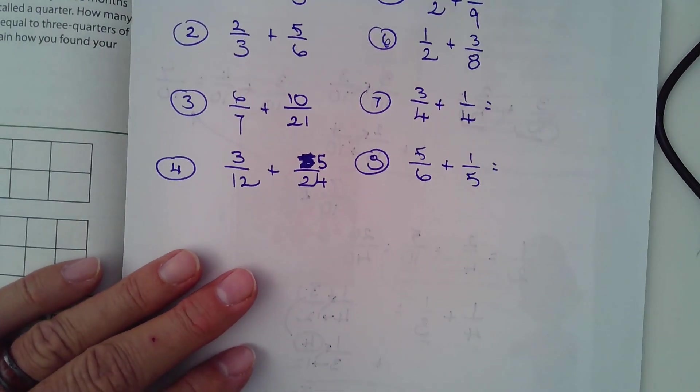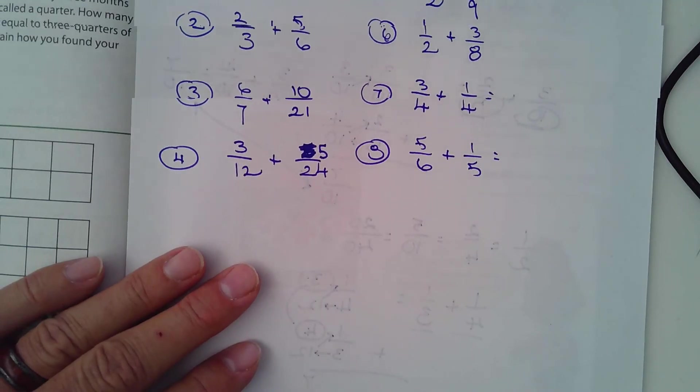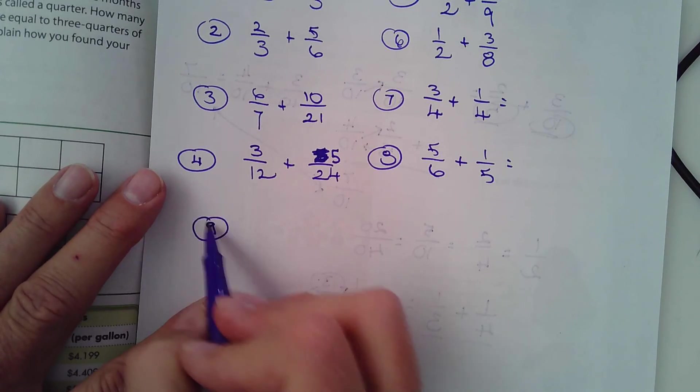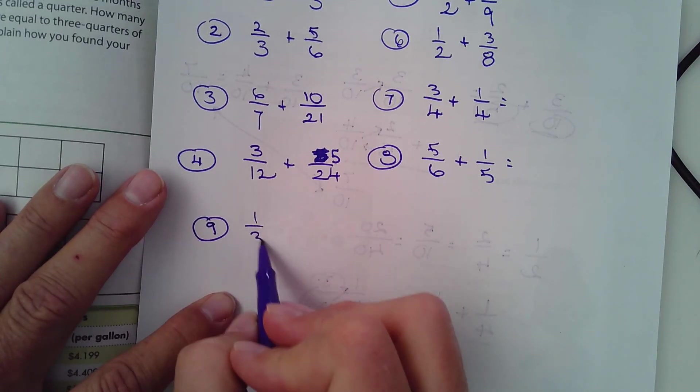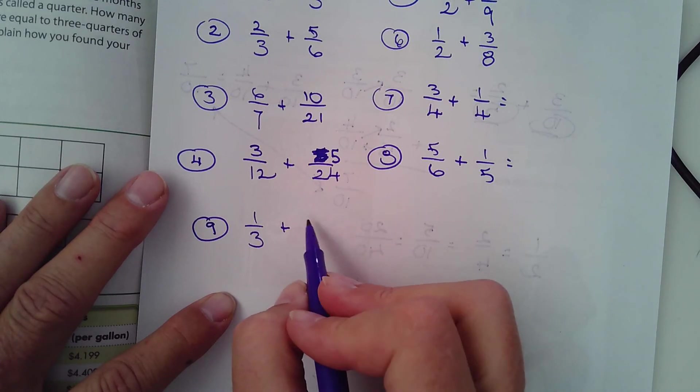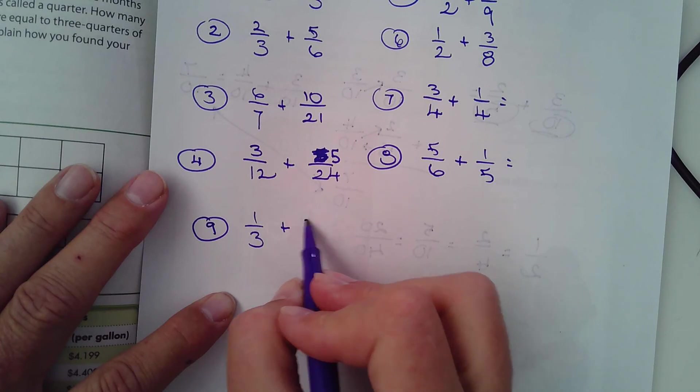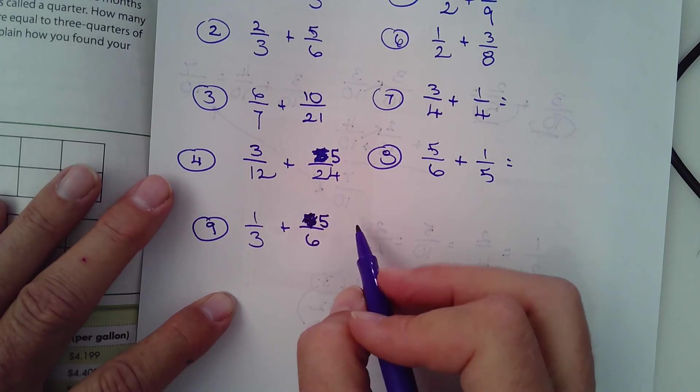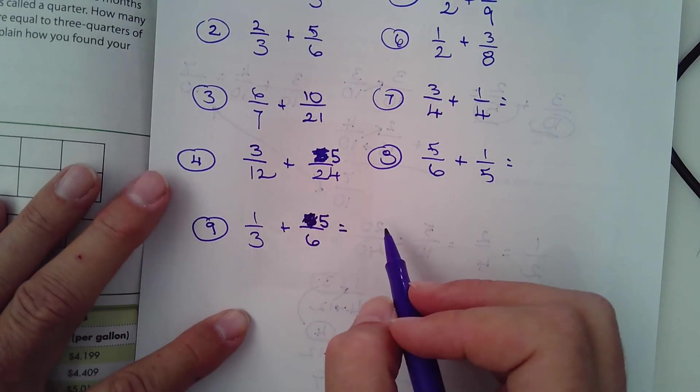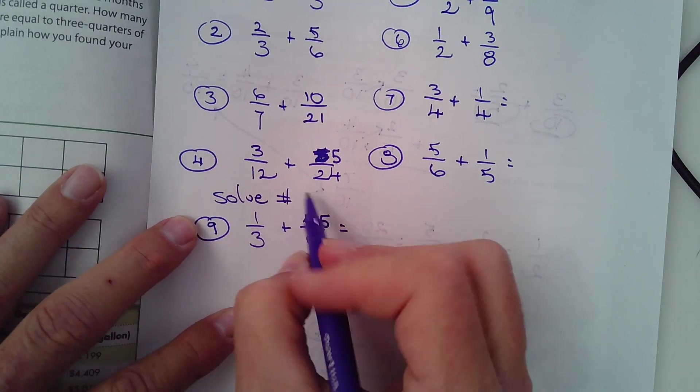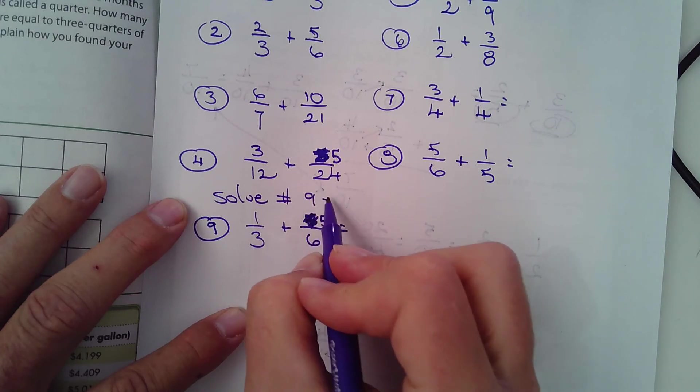And then add these. Let's do three more here. 9, or I don't know how many more. How about number nine, 1/3 plus 5/6. Again, that's a 5. Actually solve that one. Solve numbers 9 through 12.